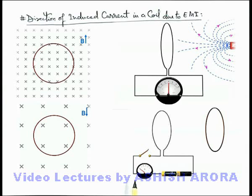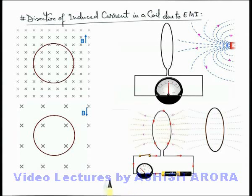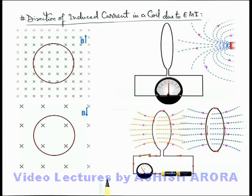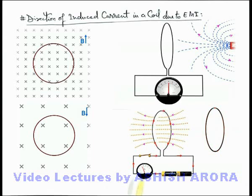A similar situation is here: there is a coil, and close to it another coil is placed. In the first coil a battery is connected, and if we close the switch, a clockwise current flows in the first coil, which produces a magnetic induction from right to left. A current is induced in the second coil. But after some time, when the current becomes constant, the current in the second coil drops to zero because there is no change in magnetic induction. Initially there was a change because the flux was increasing from zero to a specific value.